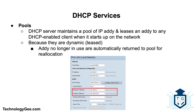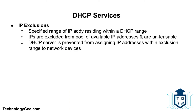A DHCP pool is when a DHCP server maintains a pool of IP addresses and leases an address to any DHCP-enabled client when it starts up on the network. Because IP addresses are dynamic or leased rather than permanently assigned, addresses no longer in use are automatically returned to the pool for reallocation.